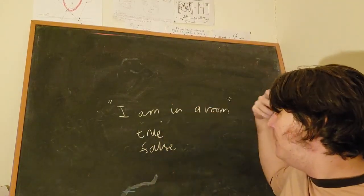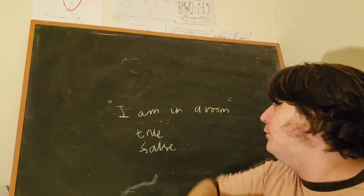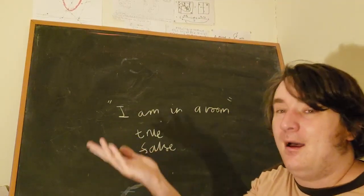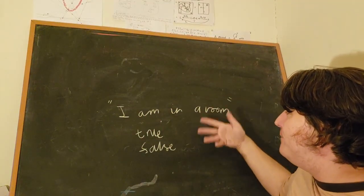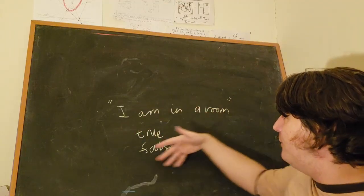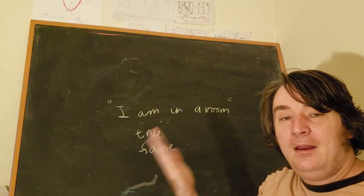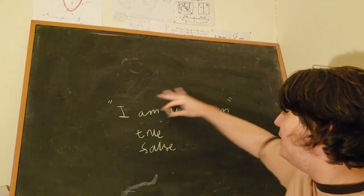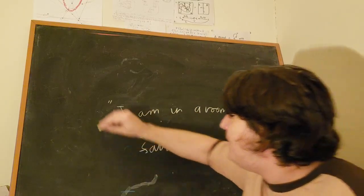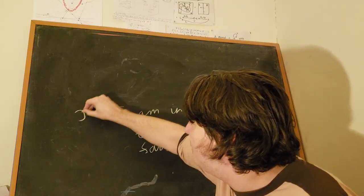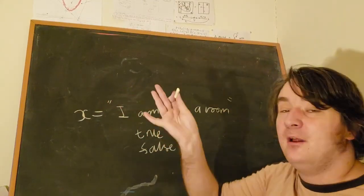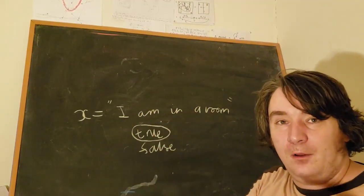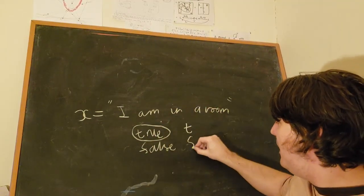What do we mean when we say something is true or false? We sort of know what these things mean in relation to other ideas in the world. We're really going to start by thinking about the logic of our everyday language. So this is the idea of a statement which might be true or false. We could give this statement a name — call it X. X is true or false. Since we're going to be writing true and false quite a lot, I'll abbreviate them: T for true and F for false.